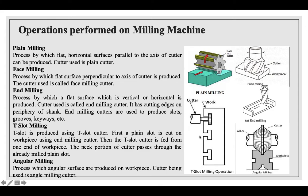The T-slot operation uses a T-slot cutter. First, a plain slot is cut on the workpiece using an end milling cutter, and then the T-slot cutter is fed from one end of the workpiece; the neck portion of the cutter passes through the already milled plain slot. Angular milling is the process by which angular surfaces are produced on the workpiece using an angle milling cutter.